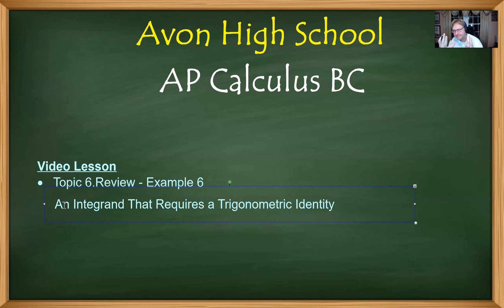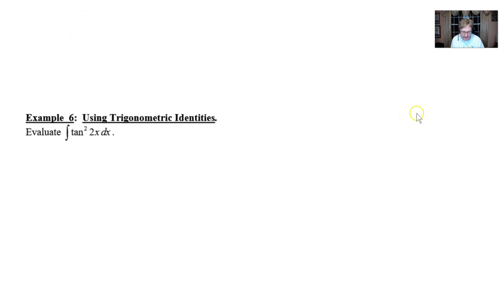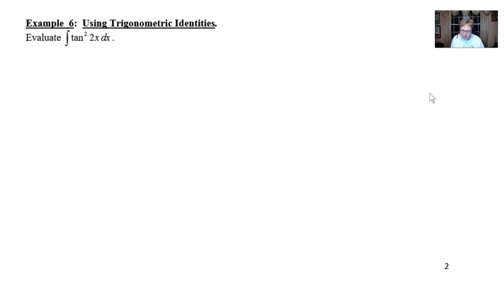Sometimes these just can't be avoided, and as you move deeper into BC integration techniques, using a trig identity every now and then is certainly going to be fair game. So let's take a look at this example. It's example number 6 in your notes, the very last one, and it involves us having to integrate tangent squared of 2x with respect to x.